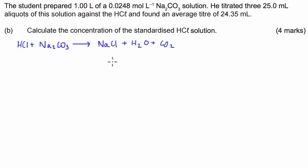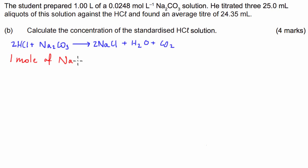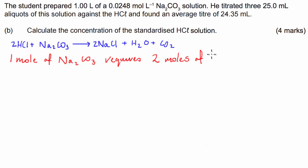Now before you guys start jumping up and down saying that I haven't balanced it correctly, I'm just going to balance it now. We're going to have two of the HCl and two of the products. We could write an ionic equation straight from the word go, but it's easier to see if you've got the full equation here. From here we can work out our molar ratios: one mole of Na2CO3 requires two moles of hydrochloric acid.